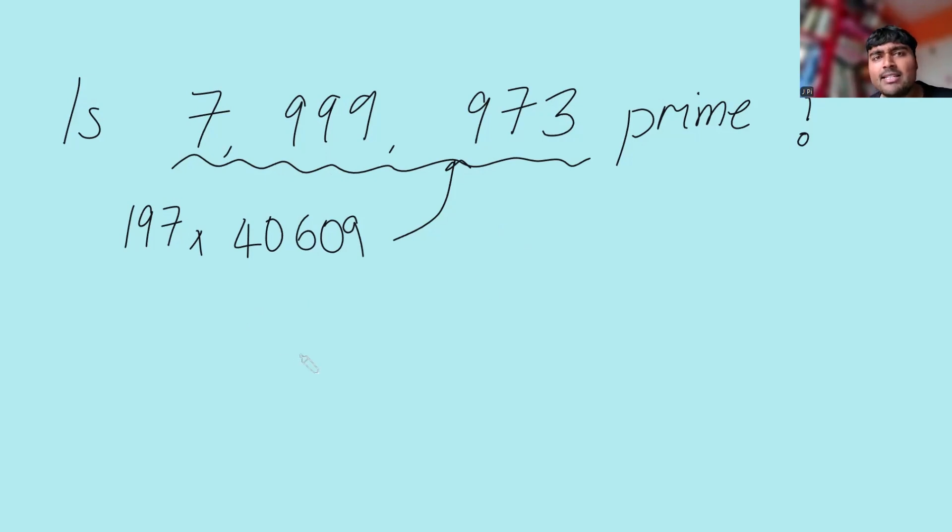This number is slightly smaller than 8 million. How do we use that? Well, this number is in fact 8 million minus 27, and we might notice that 27 is a cube number, so this is 3 cubed.